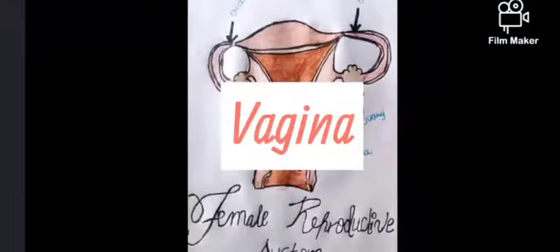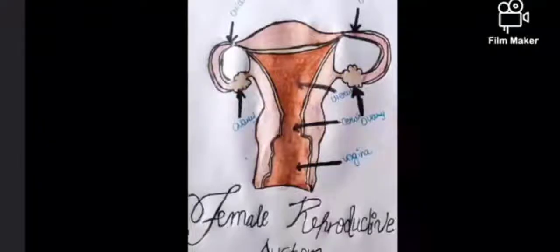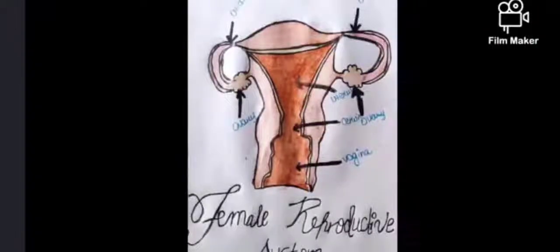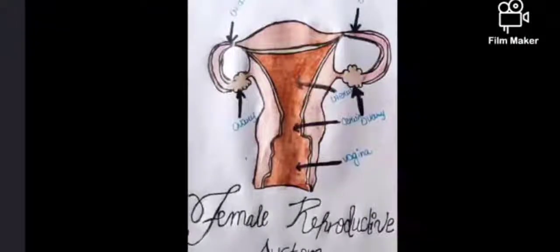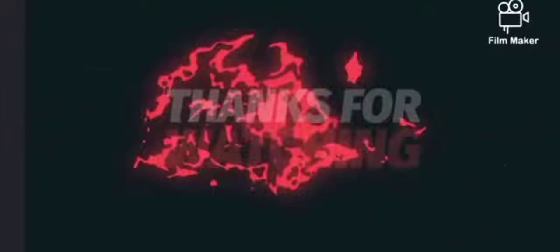The vagina is 9 cm long, receives sperm from the male partner, has an acidic environment, and serves as the birth canal. That's all for the video. Thanks for watching.